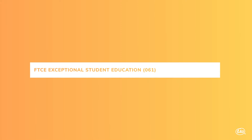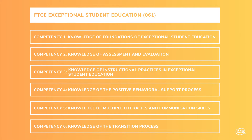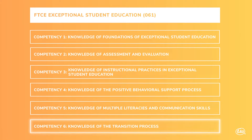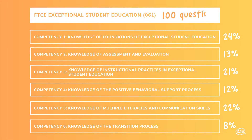The FTCE Exceptional Student Education test consists of six competencies. You'll need to have knowledge of: foundations of exceptional student education, assessment and evaluation, instructional practices in exceptional student education, the positive behavioral support process, multiple literacies and communication skills, and the transition process. Each competency is worth between 8 and 24 percent of the whole exam, totaling 100 multiple-choice questions in all.